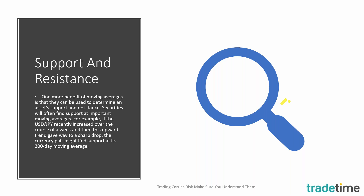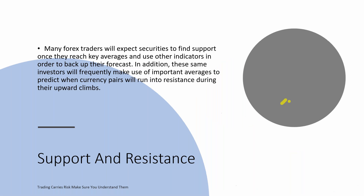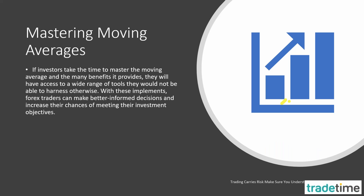Moving averages can also be used to determine an asset's support and resistance. Securities will often find support at important moving averages. For example, if USD/JPY recently increased over a week and then that upward trend gave way to a sharp drop, the currency pair might find support at its 200-period moving average. Many Forex traders will use key averages to predict when currency pairs will run into resistance during their upward trend, using other indicators to back up their forecasts.